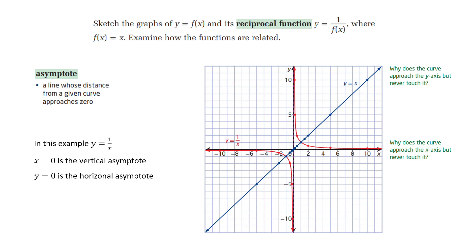Now we discuss the reciprocal function y equal to 1 over f(x). Starting with the simplest one, y equal to 1 over x. We can draw the graph by picking points: (1, 1), (2, 1/2), (5, 1/5), (1/2, 2), (1/5, 5). By picking these points, we can draw the graph.